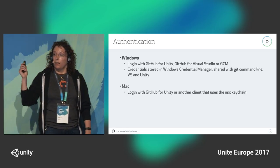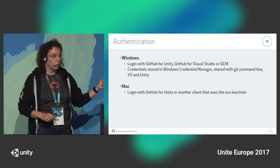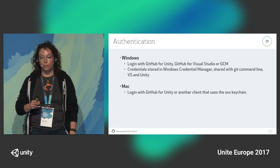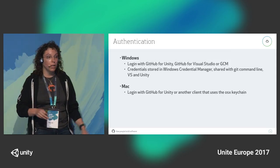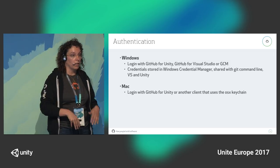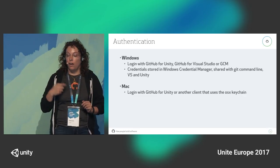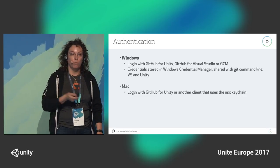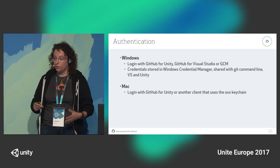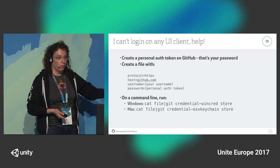Authentication: GitHub for Unity uses the Windows Credential Manager on Windows and the keychain on OS X. So if you log in with GitHub for Unity, GitHub for Visual Studio, or the Git Credential Manager that Microsoft ships on Windows, credentials will all be in the same place. Any one of these clients will put your credentials in the right place and make everybody else work. On the Mac, we use the keychain — as long as credentials are there, things will work. If it doesn't work, you can always put the credentials in the keychain yourself.